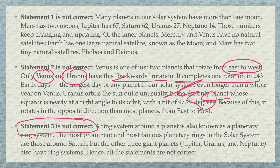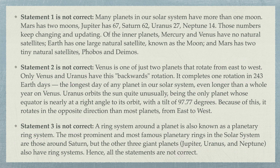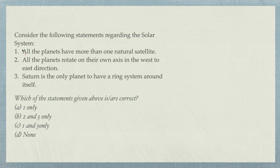Statement three is also not correct. The ring system around a planet is called the planetary ring system. Saturn has the most prominent and famous ring system, but three other giant planets — Jupiter, Uranus, and Neptune — also have ring systems. So Saturn is not the only planet with rings.